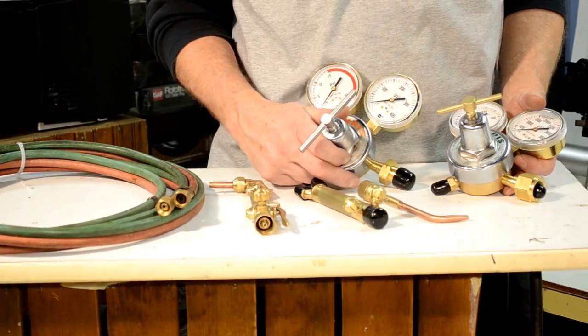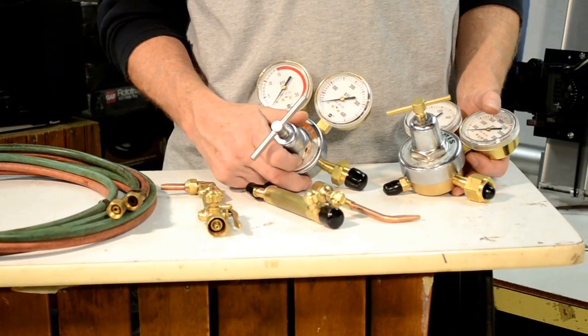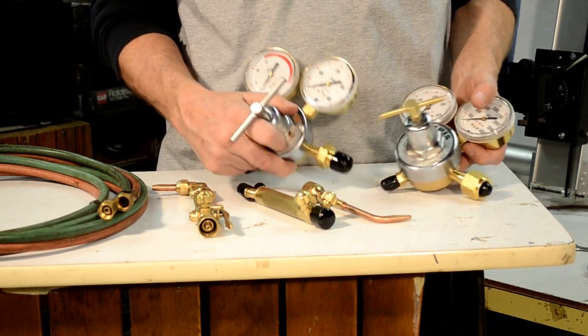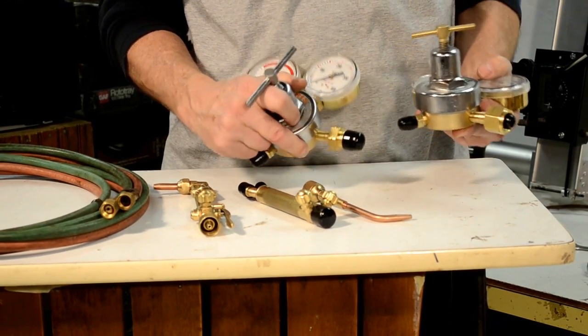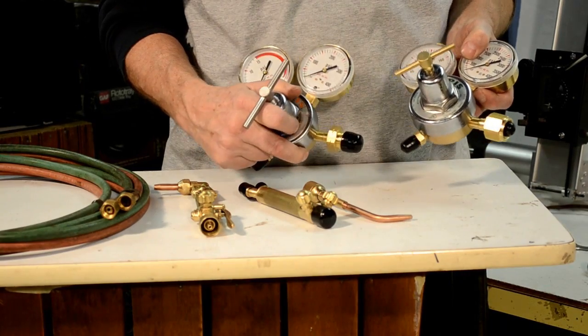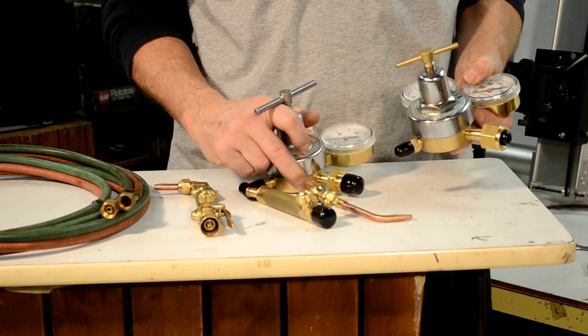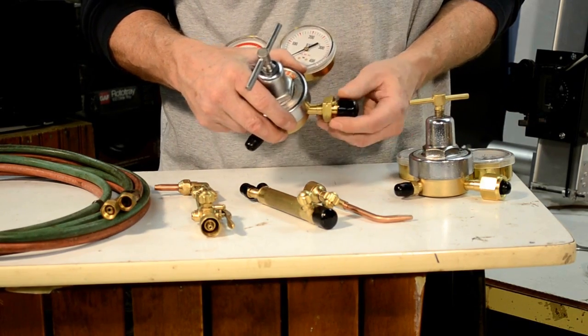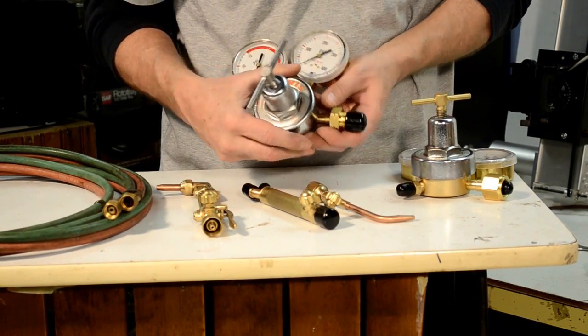We're going to put these rebuilt gauges and regulators back on my old tanks. This set is an old Harris set. It was redone by OxArc in Spokane. It's a vintage set. Anyhow, we're going to show you how to properly install the gauges on the tanks.